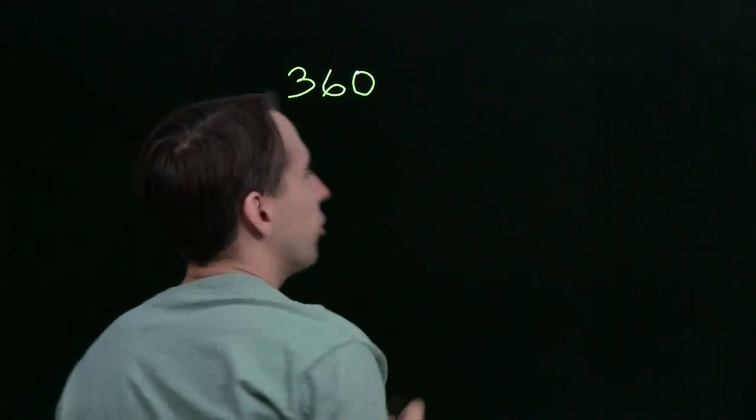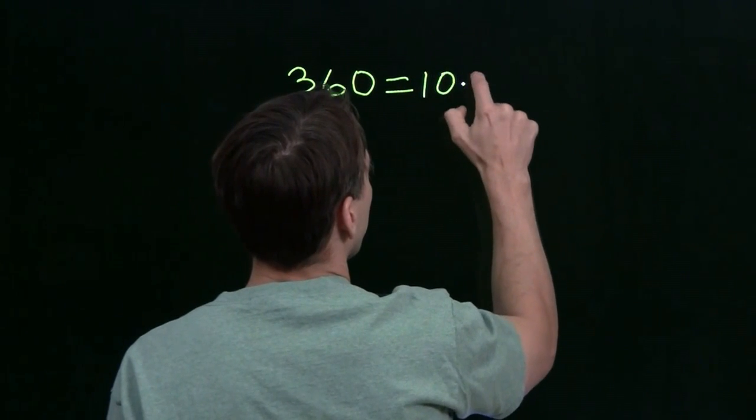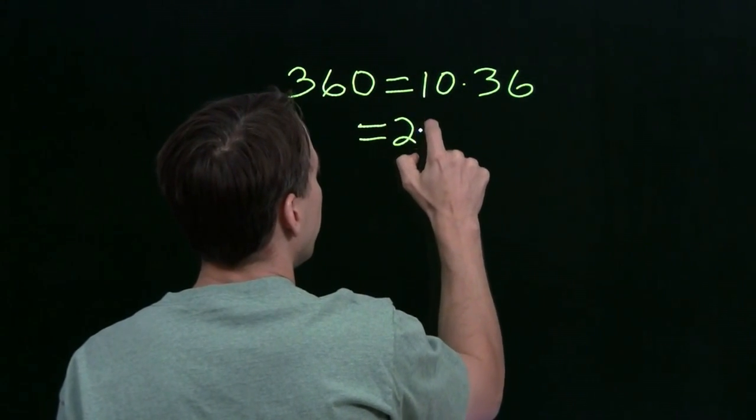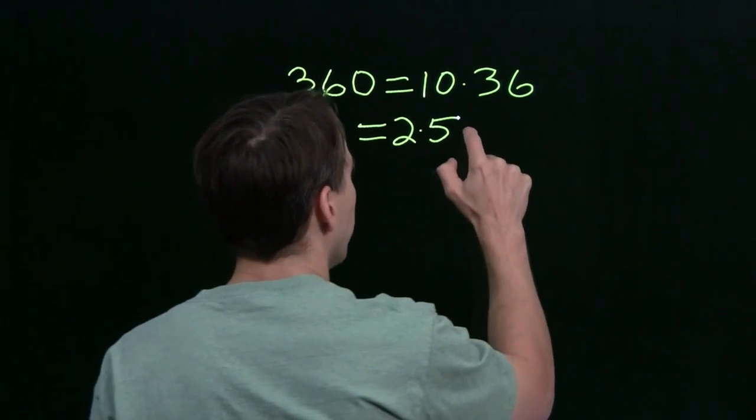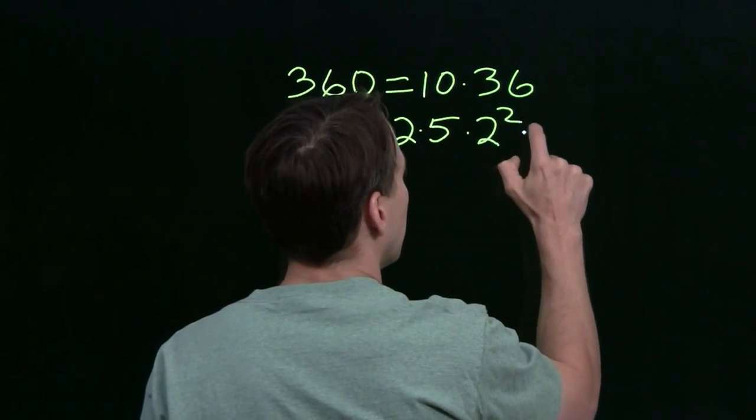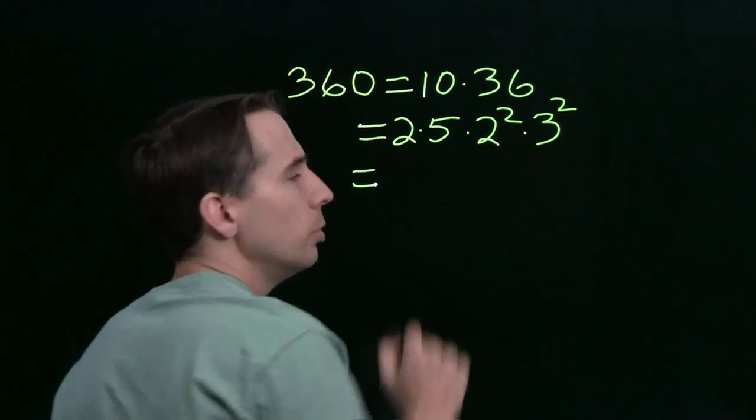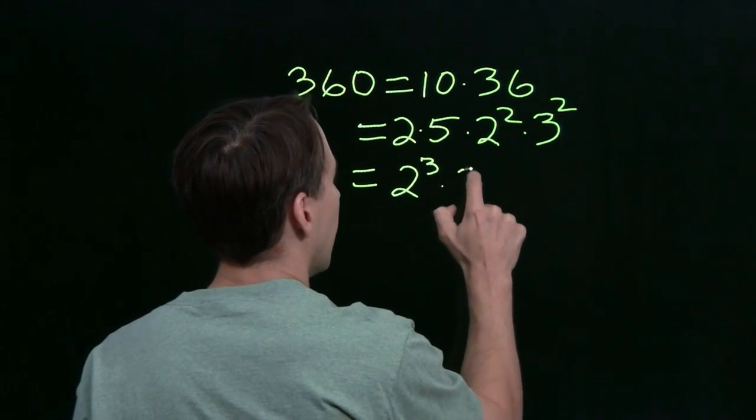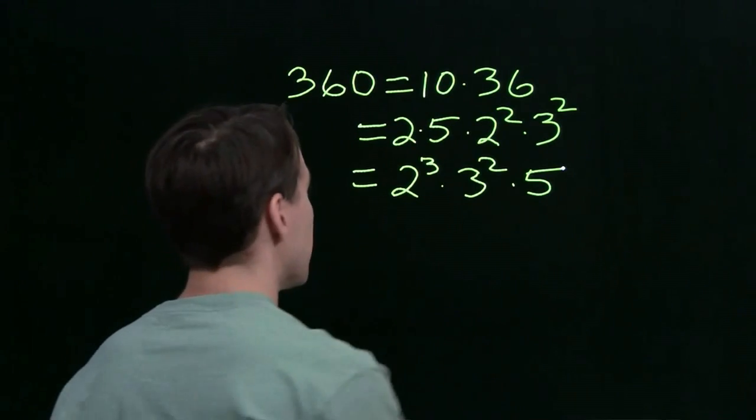So we'll start with 360. We're going to find the prime factorization of that. That's just 10 times 36. Let's see, 10 is 2 times 5, 36 is 4 times 9. 4 is 2 squared, 9 is 3 squared, and now I can combine the 2 and the 2 squared, that gives me 2 cubed. I have the 3 squared, and I have the 5. So there's my prime factorization of 360.